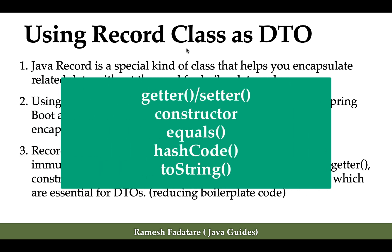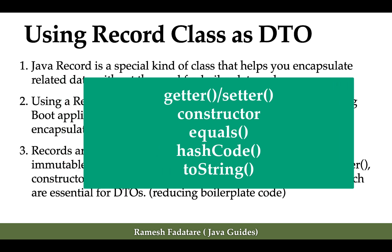The Java compiler automatically generates setter methods, constructors, equals, hashCode, and toString methods. In a normal Java class, we have to manually create all this boilerplate code, but the Java record class tells the Java compiler to automatically generate all of it.